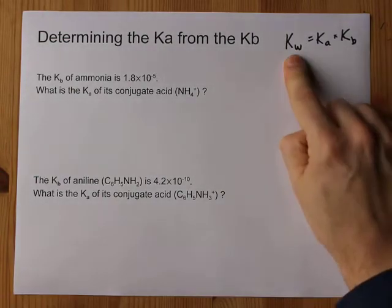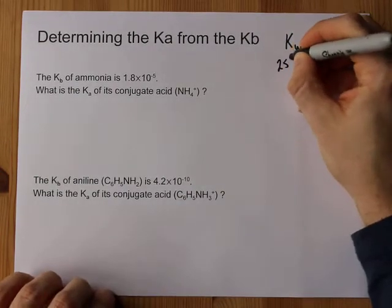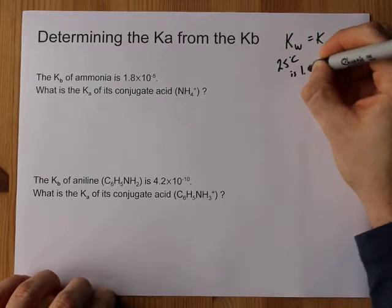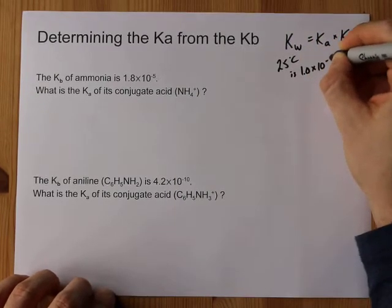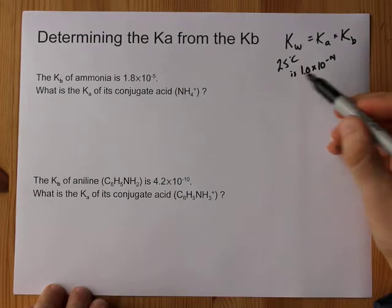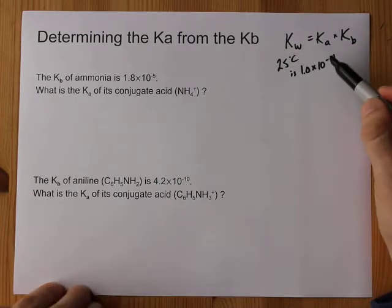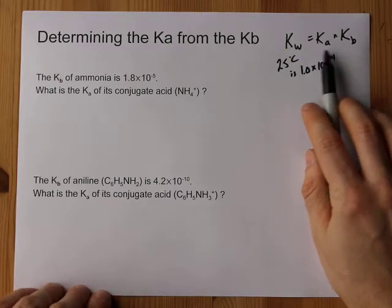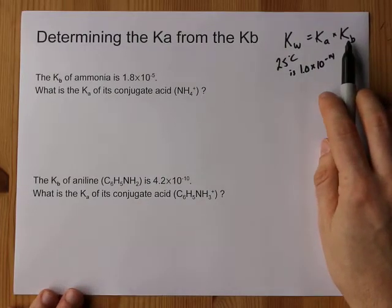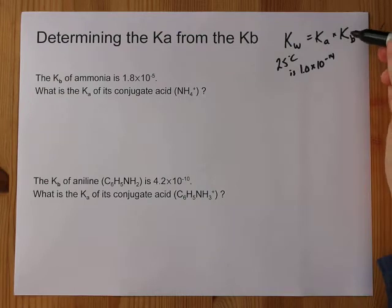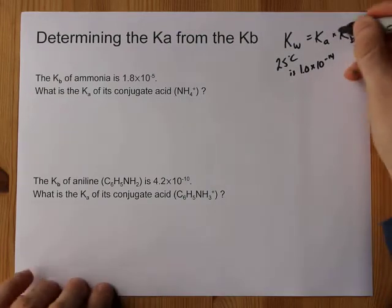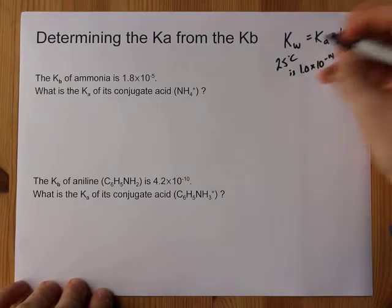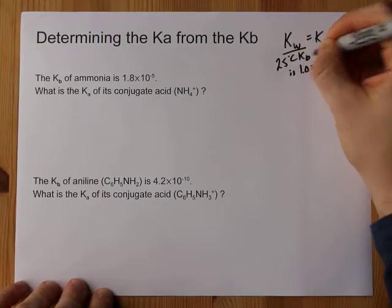You're gonna need the Kw which at 25 degrees Celsius is 1.0 times 10 to the negative 14, but if you're given a different temperature you might have to look up the Kw. Kw is always the product of Ka times Kb, and if you're given the Kb then all you have to do to calculate Ka is divide Kw by it.